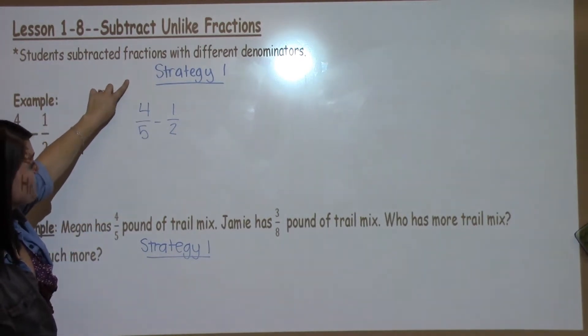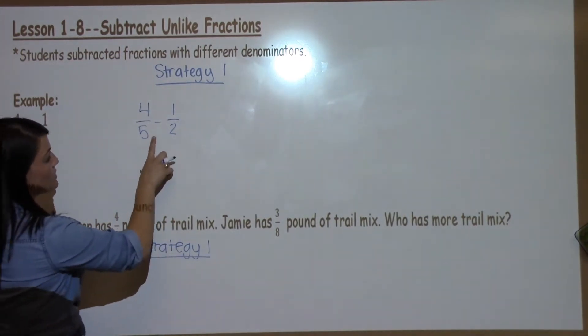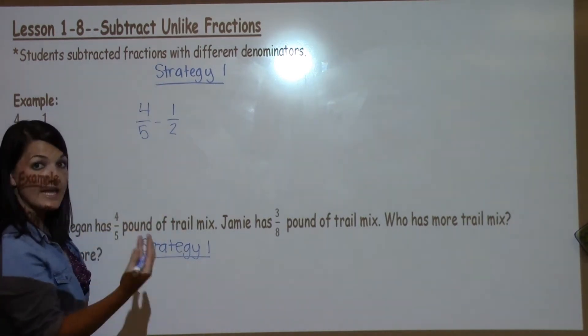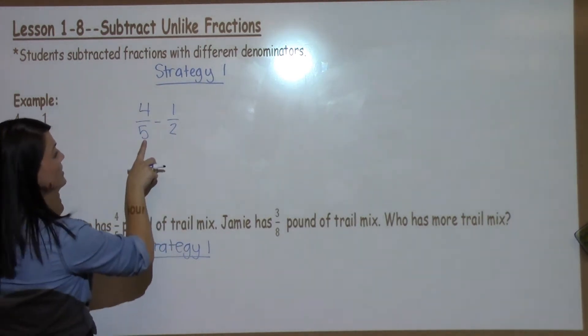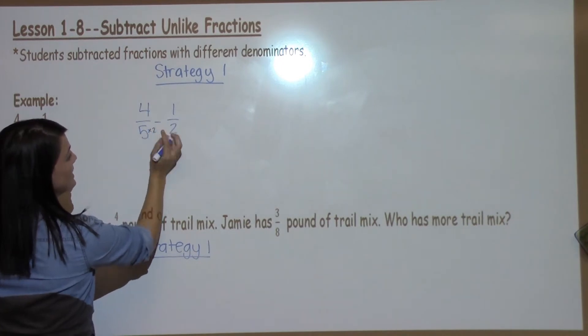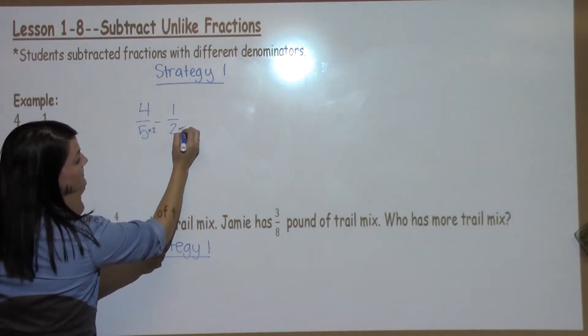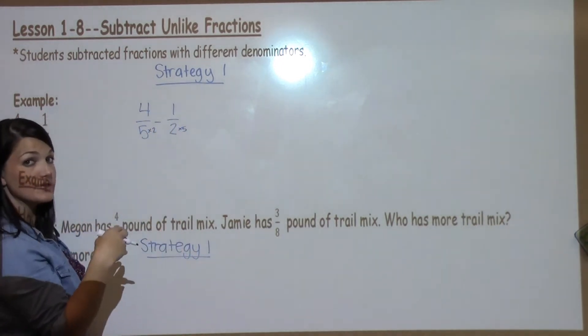We learned yesterday in Strategy 1 that we are going to multiply the denominators by each other to make them the same. So I'm going to take 5 times 2 and 2 times 5, so I'm just multiplying by the opposite denominator.